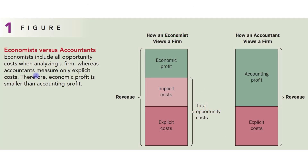As you can see in this figure, economists include all the opportunity cost when analyzing a firm, whereas accountants measure only explicit cost. Therefore, economic profit is smaller than the accounting profit. You can see how an economist views a firm.